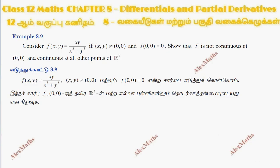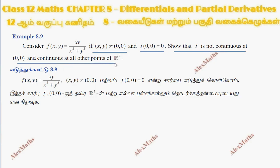Hi students, this is Alex here. Example 8.9: Consider f of x, y — this function equals xy/(x²+y²) when x and y are not equal to 0, and f(x,y) = 0 when (x,y) = (0,0). We need to prove that f is not continuous at (0,0) and is continuous at all other points of R².